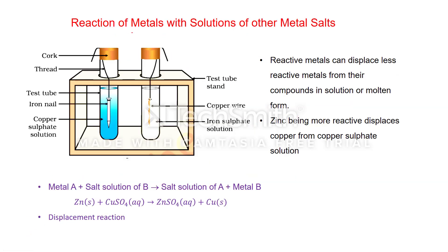Next, the reaction of metals with solutions of other metal salts. Consider two test tubes: one with copper sulfate solution with an iron nail dipped in it, and one with iron sulfate solution with a copper wire dipped in it. After some time, the test tube with copper wire in iron sulfate shows no change, but the test tube with the iron nail shows the blue color of copper sulfate fading to colorless, and a brown coating deposited on the iron nail.